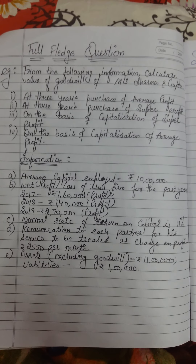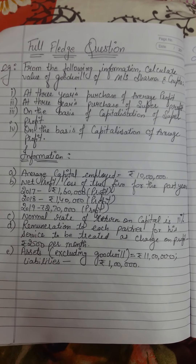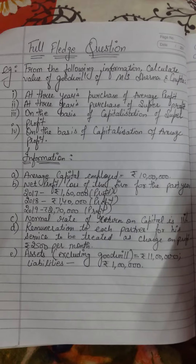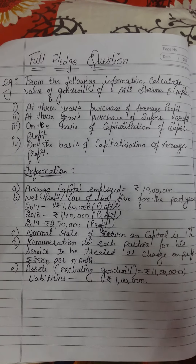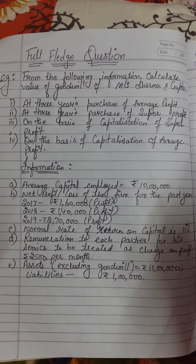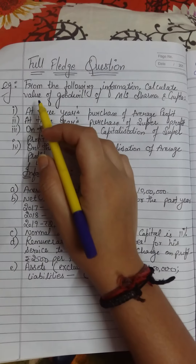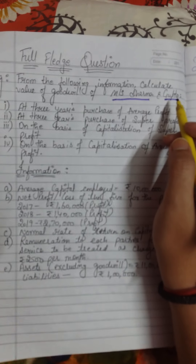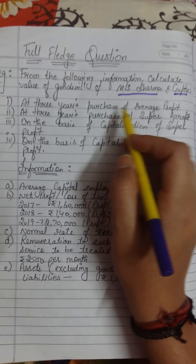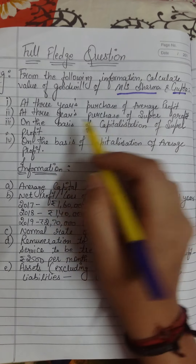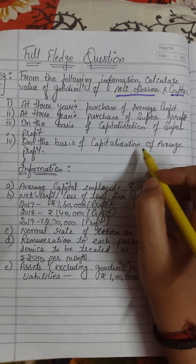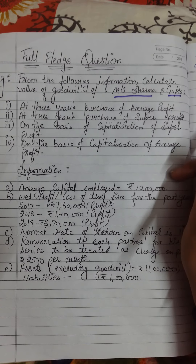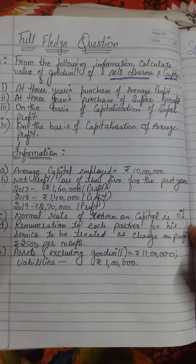Welcome back everyone. We are doing the goodwill chapter — the valuation of goodwill. We had covered three methods: the average profit method, super profit method, and capitalization method. This question requires you to calculate the value of goodwill for the firm of Mercil, Sharma, and Gupta — two partners — by all three methods.